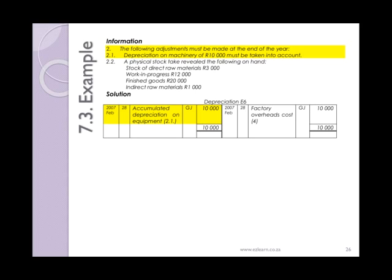Number 2: the following adjustments must be made at the end of the year. 2.1 — depreciation on machinery of 10,000 rand must be taken into account. This depreciation is recorded as normal by debiting the depreciation account and crediting accumulated depreciation on equipment. Since this is depreciation of factory machinery, you can predict that it will need to get closed off to the factory overheads cost later on.